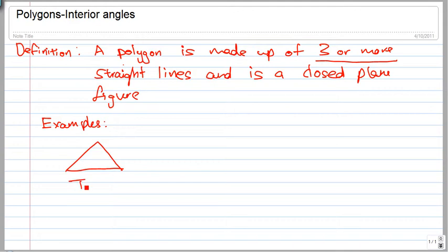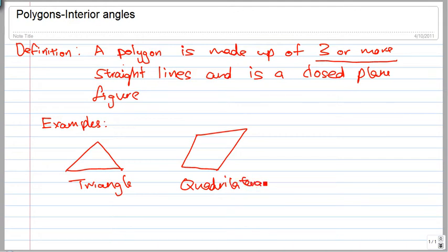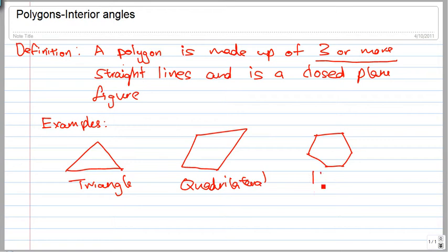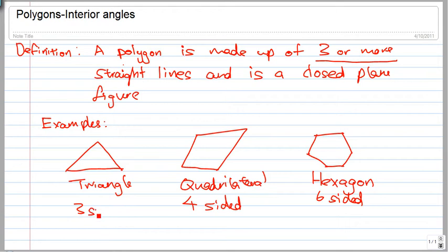Examples of polygons include the three-sided triangle, the four-sided quadrilateral, and the five-sided pentagon. Apologies — I accidentally drew a six-sided figure, so this is actually a hexagon, which is six-sided: one, two, three, four, five, six. A polygon can have many many sides.